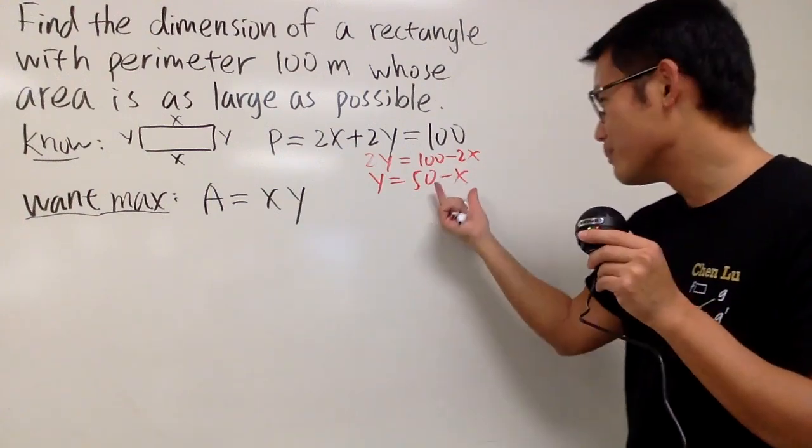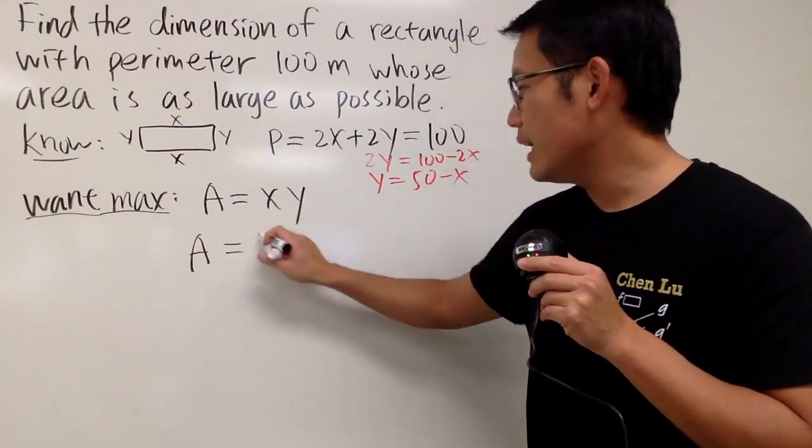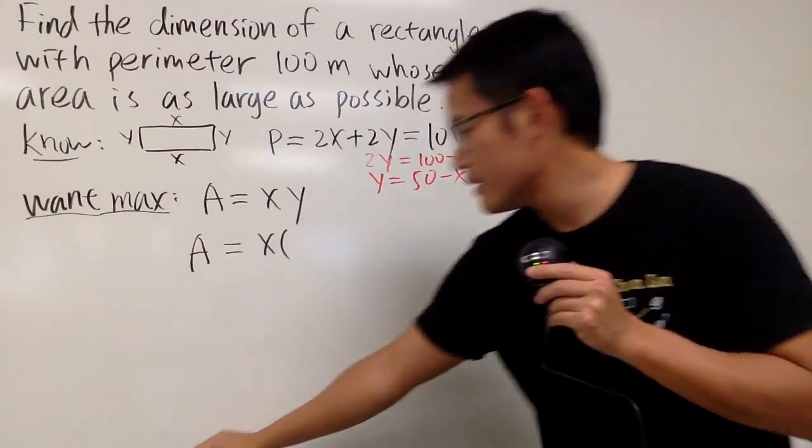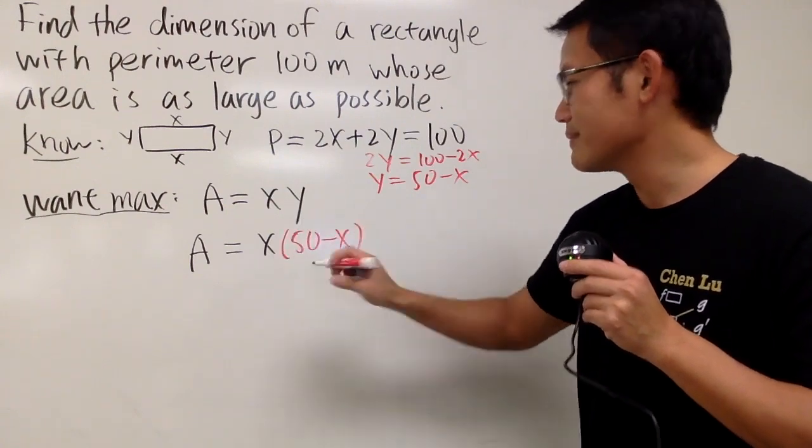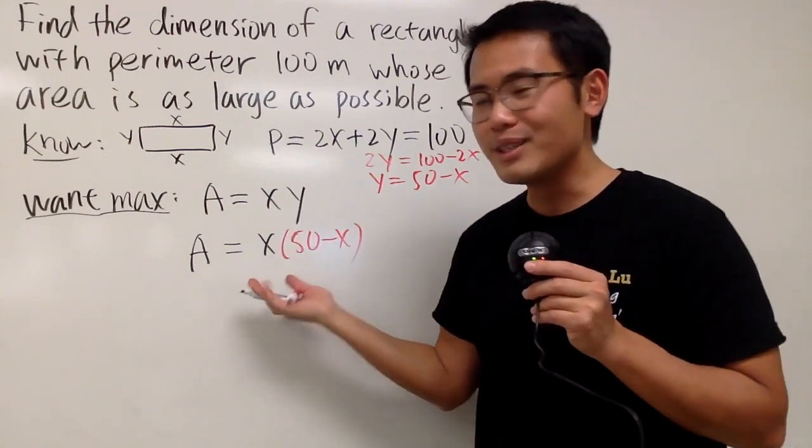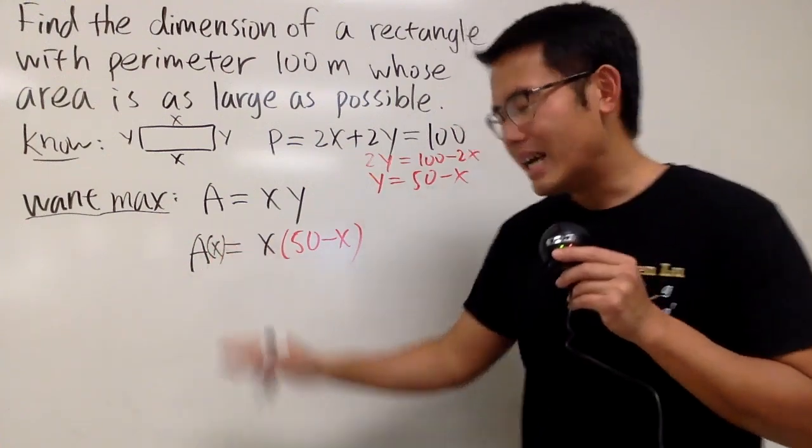Very nice. Then, put this right there, so we see A equals x times, and the y is just 50 minus x. Very nice. And this now is just a function of x, I will just call this A of x.